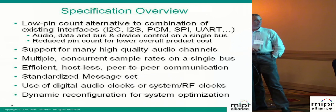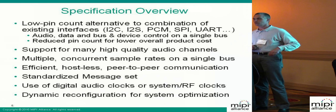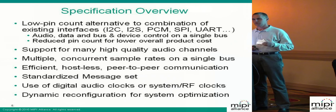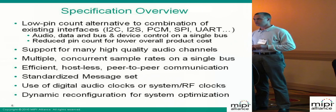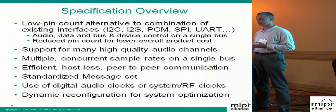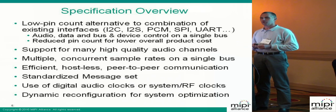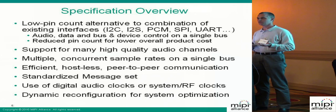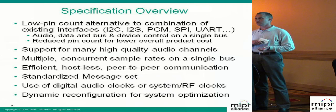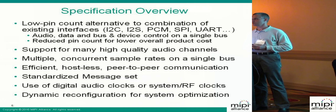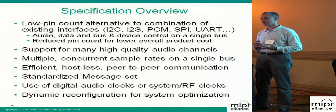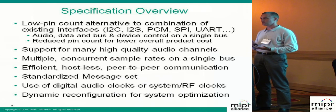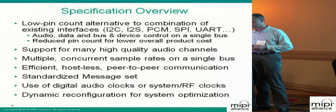One thing that's really important in this system is that you have the choice of several clocks. You can either use the traditional audio clocks that are multiples of 48 or 44.1 kHz. But if in your system you have a 26 MHz reference clock, a 27 MHz reference clock from your RF or display, or 24 MHz from USB, you can use this reference clock as well for Slimbus. So you have flexibility in sampling rates and clocking.